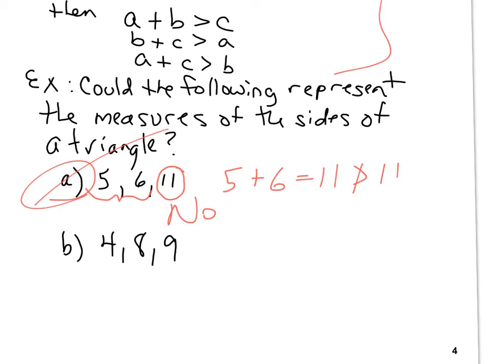Now, let's look at part B. For part B, we are looking at 4, 8, and 9. So, just take the smaller two, 4 and 8, better be bigger than 9. Well, it is. 4 plus 8 is 12, which is bigger than 9. So, yes, this could form a triangle.